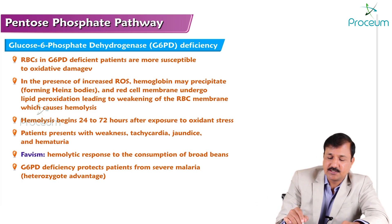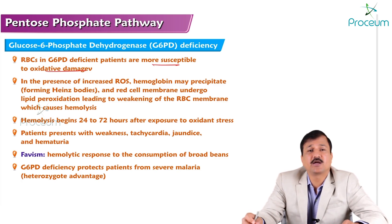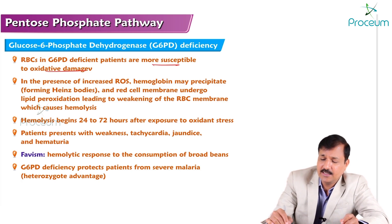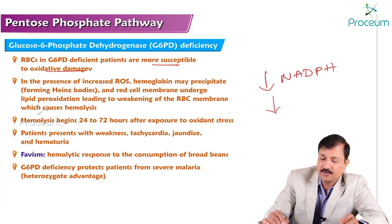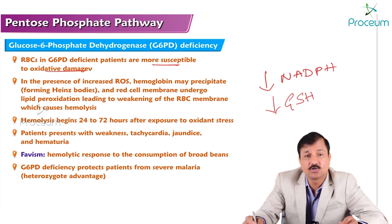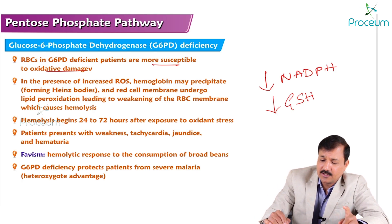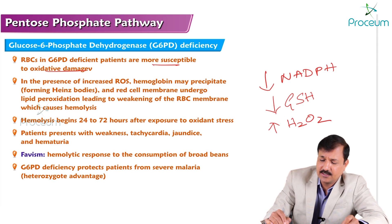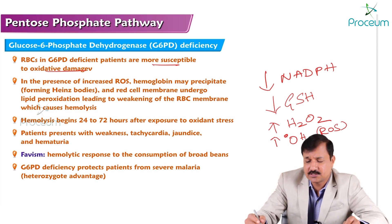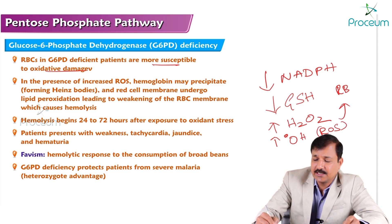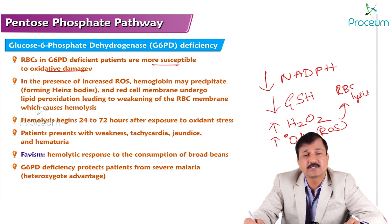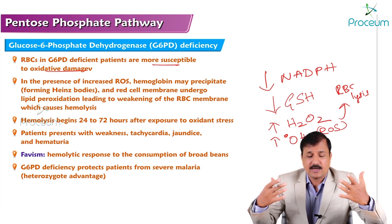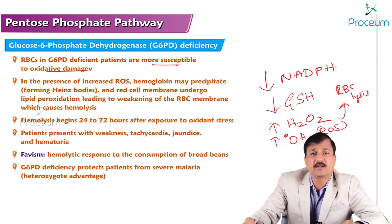RBCs in G6PD-deficient patients are more susceptible to oxidative damage because these patients already have less than normal NADPH. Less NADPH means relatively less reduced glutathione (GSH). Less GSH means higher amounts of hydrogen peroxide, which in turn leads to higher hydroxyl radical formation — a reactive oxygen species. This damages the red blood cell membrane, causing RBC lysis, hemoglobin loss, and anemia.